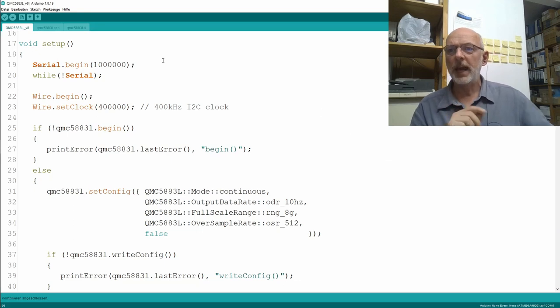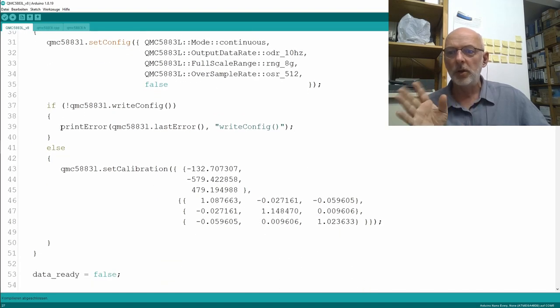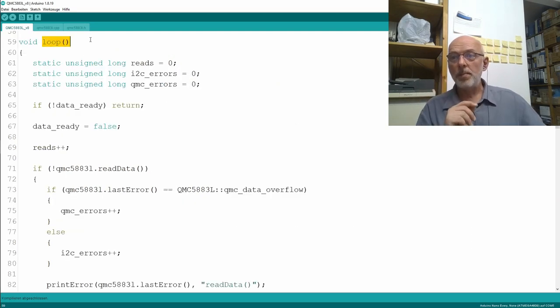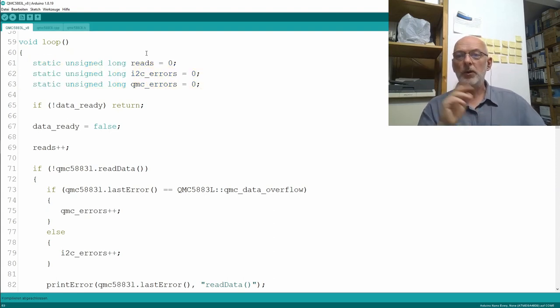To analyze these errors a little bit further, I changed the code in the sketch. In the setup, I'm again printing out each and every error I'm encountering and no longer setting that error flag for the loop. In the loop, I have now three static counters, all initialized to zero. The first one counts the read data calls I do. The second one, the I2C errors I encounter. And the third one, the QMC errors I encounter. There's only one QMC error, the QMC data overflow.